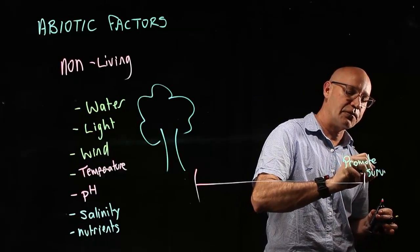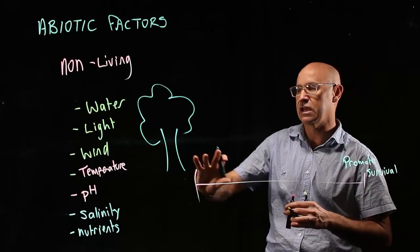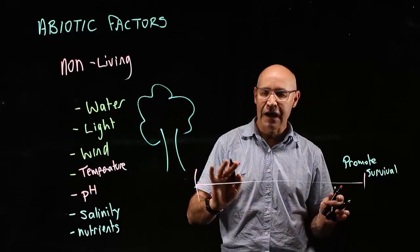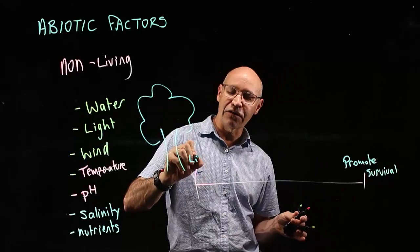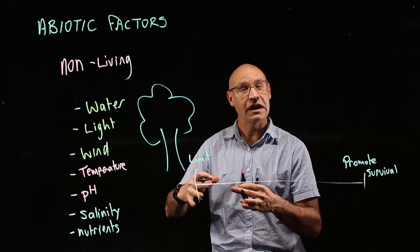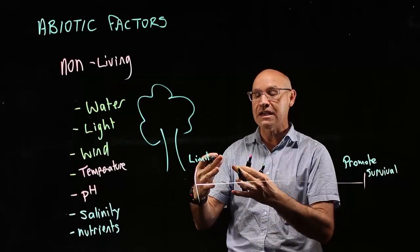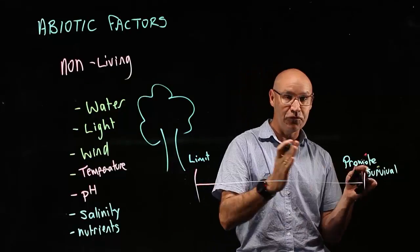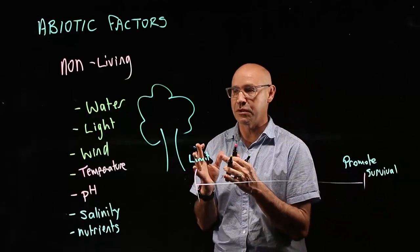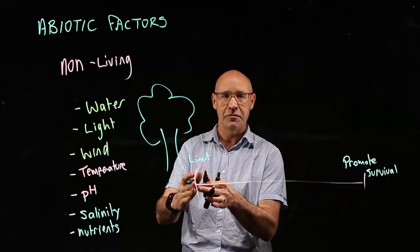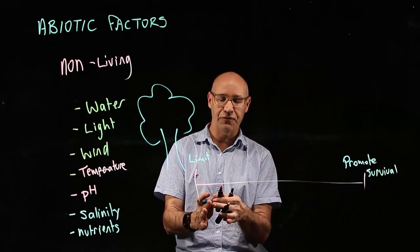For example, a plant needs light to grow and to survive. And there's others at the other end of the spectrum - the other abiotic factors actually limit or make it harder for an organism to survive. If we're talking about light and plants, high light promotes survival. Low light makes it more difficult to survive.